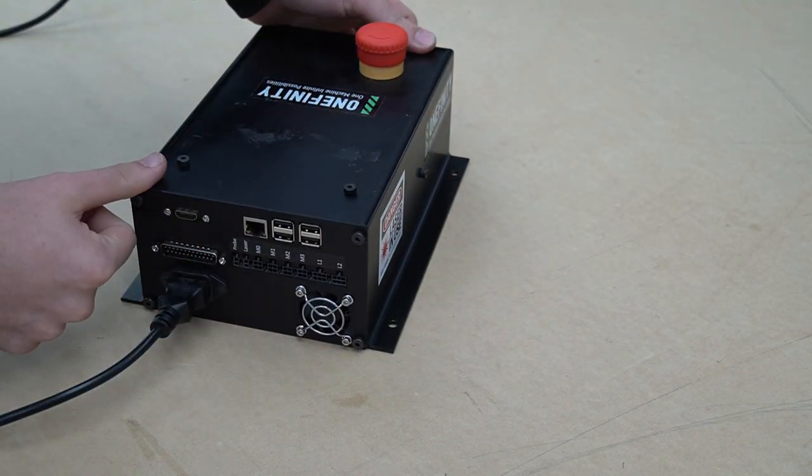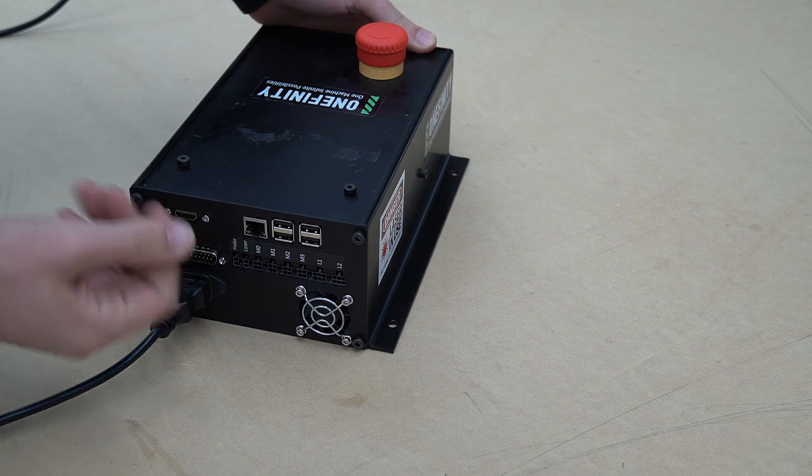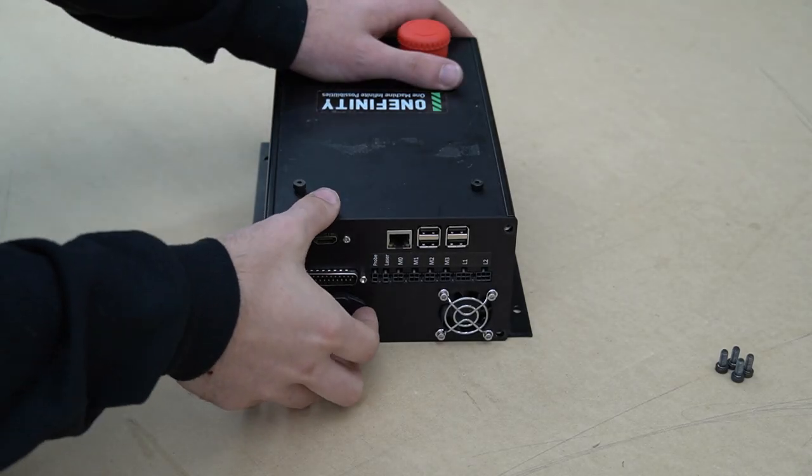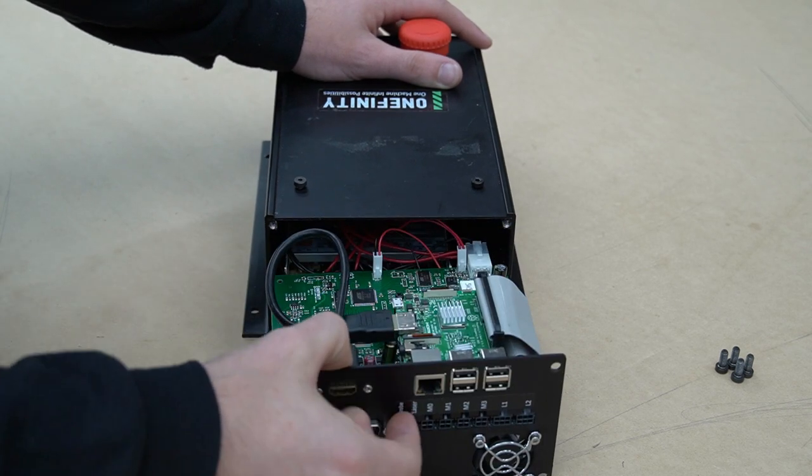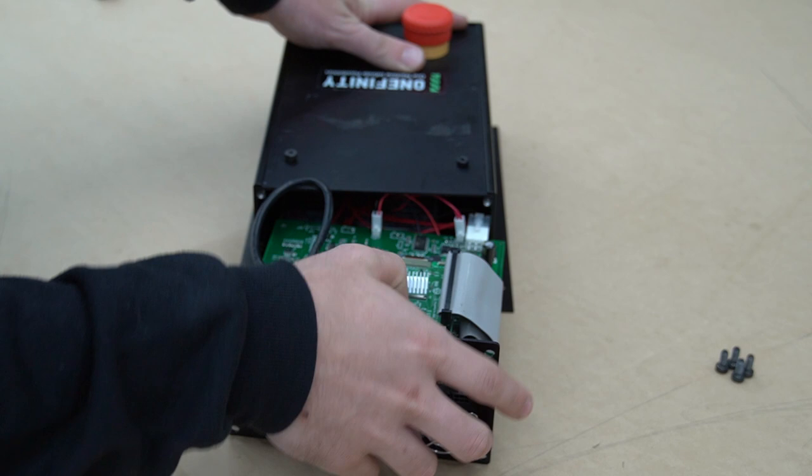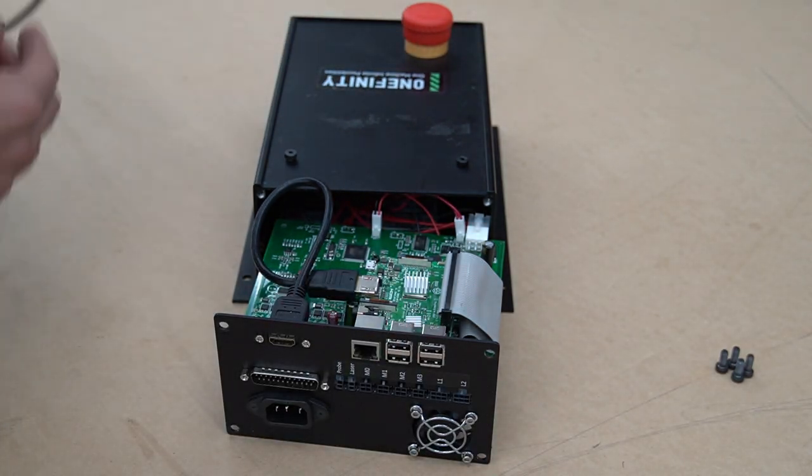We're starting with a controller we believe has a dirty or defective power switch. We'll try to flip it on and use the fan as an indicator of whether or not the controller is turning on. Remember to always unplug your controller before working on it to prevent any injury to you or damage to the board.